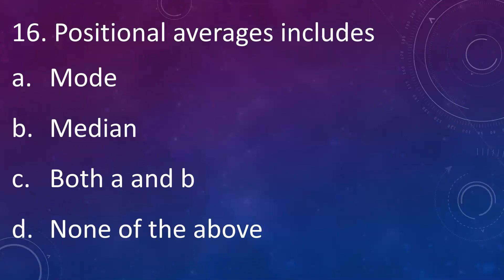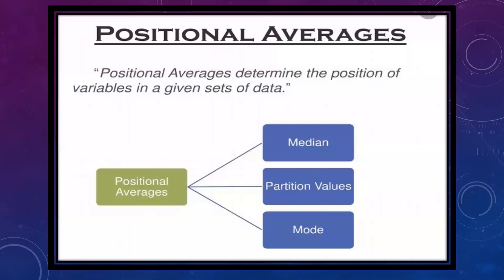Positional average includes: A: mode, B: median, C: both A and B, D: none of the above. Answer is C: both A and B. Positional averages determine the position of the variable in a given set. This includes median, mode, and partition values like quartile, decile, and percentile — these are all positional averages.